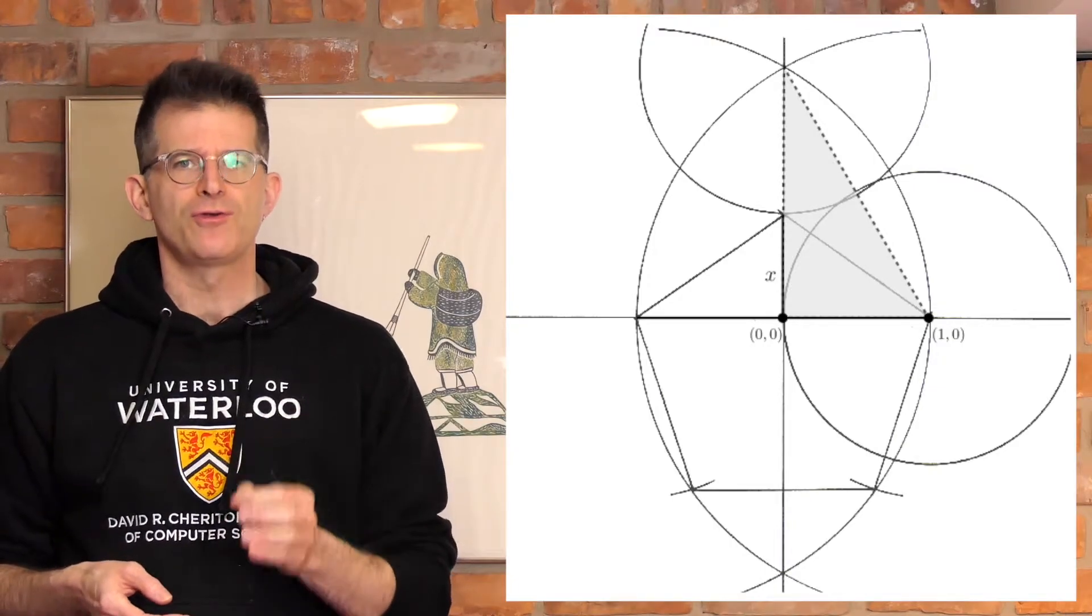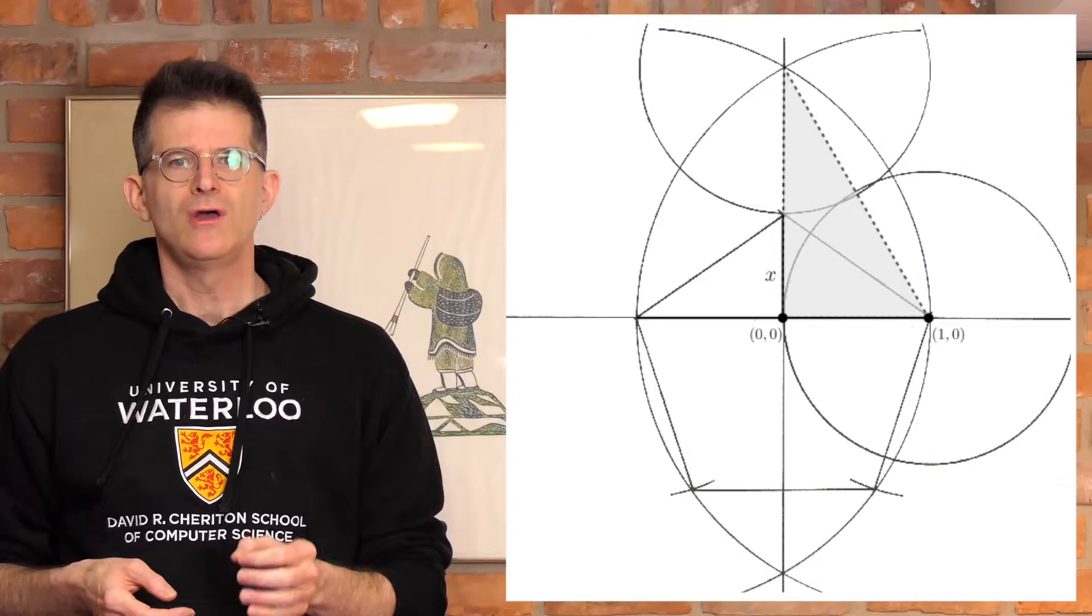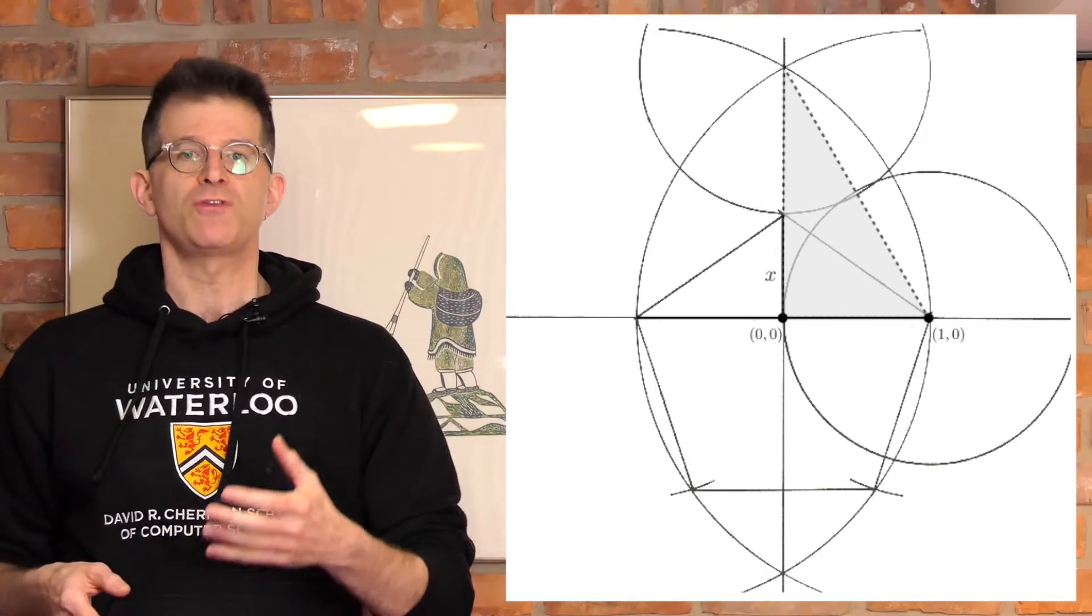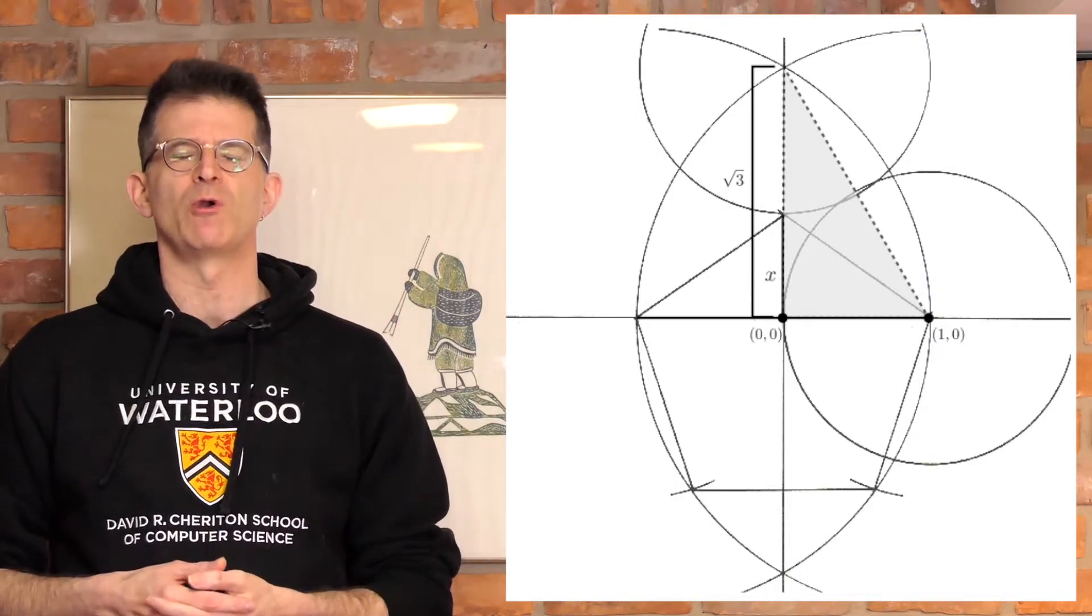That is a 30 60 90 magic triangle, which allows me to deduce that it is exactly root three tall. It has to have a height of square root of three.